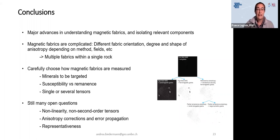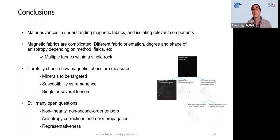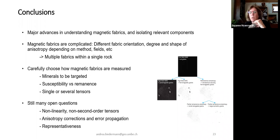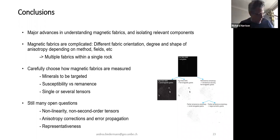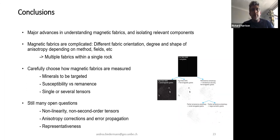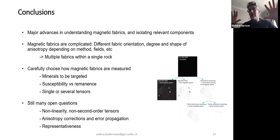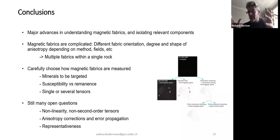Suzanne will be looking at the chat window for questions. Richard asks: we're increasingly imaging rocks in three dimensions using X-ray tomography and can measure orientations of mineral phases in 3D — how strong a deviation from a random distribution is required to explain the sorts of anisotropies we see? Is it a fraction of a degree or much larger? If too small, you won't pick it up with X-ray tomography.